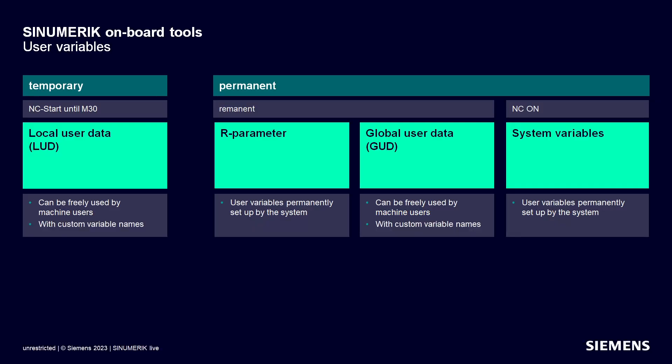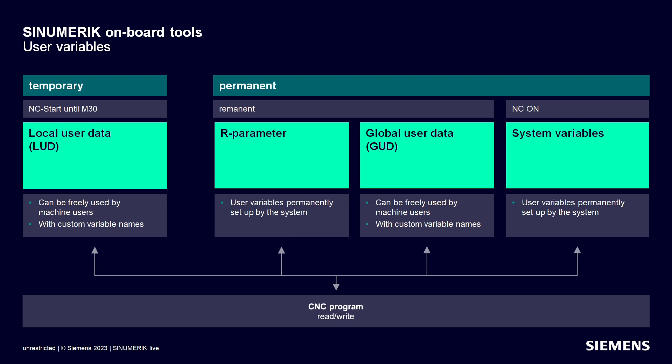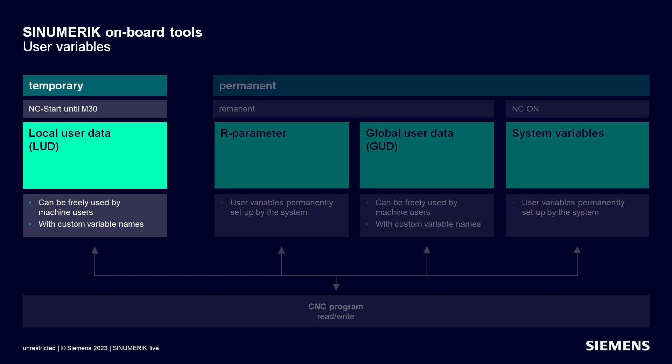Which on-board tools are available to generate CNC programs that are as flexible as possible? First of all, we need user variables. CINEMERIC offers a wide range of different types of variables in addition to the familiar R-parameters. These can be accessed via CNC programs. The user-definable local user data are important for calculating the machining parameters.